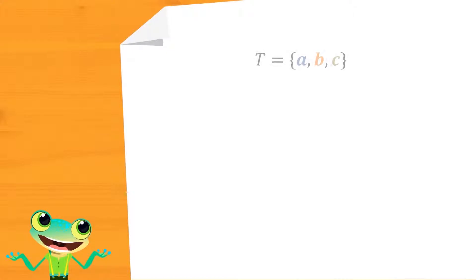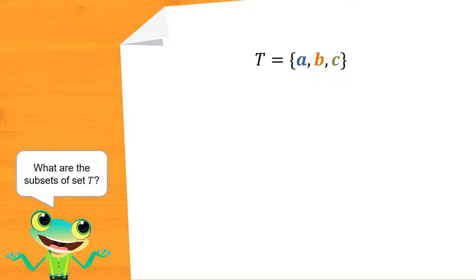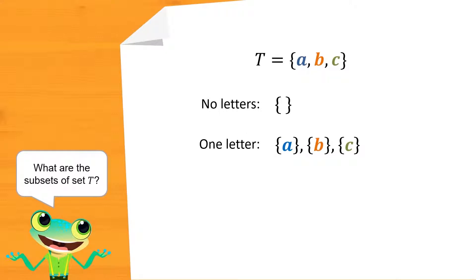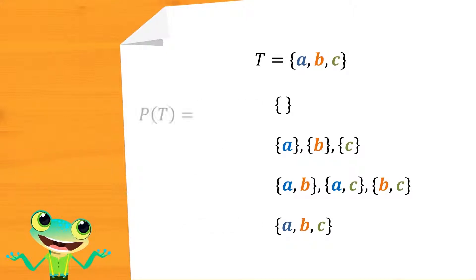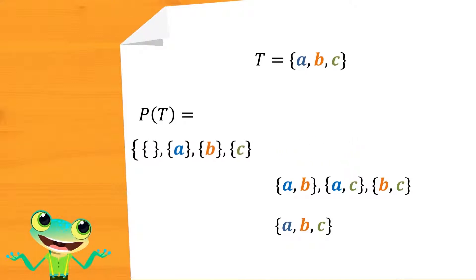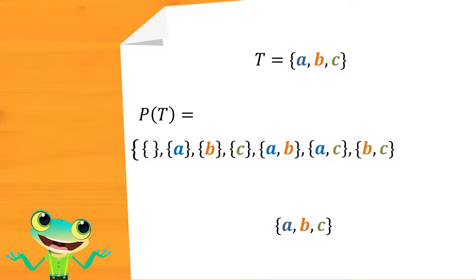Let us take a look at another example. The set D consists of the letters A, B, and C. What are the subsets of this set? First, we have the null set, which is empty. Next, we have the sets that consist of one letter only, followed by sets with two letters only. Lastly, we have the set that consists of all three letters, which is set T itself. These subsets then make up all the elements of the power set of set T. Observe that these elements of the power set are all sets.